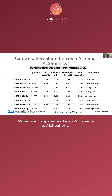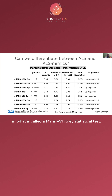When we looked at Parkinson's versus ALS patients, only five out of the eight had a very large difference or were significantly different in what's called a Mann-Whitney statistical test.